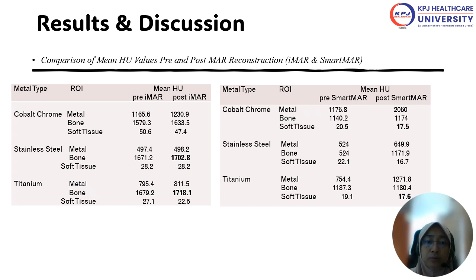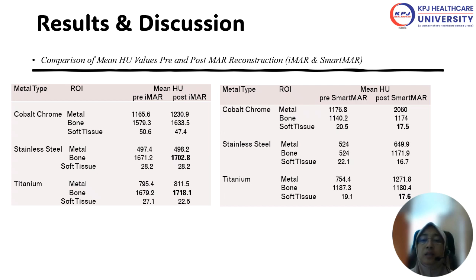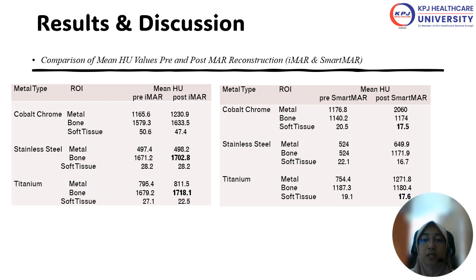The bold numbers in the tables show that for stainless steel and also titanium, the mean HU values are in the range of the control image reading, except for cobalt chromium. For the soft tissue region, cobalt chromium is in range with titanium, except for stainless steel — which is close but not too far from the control image values.